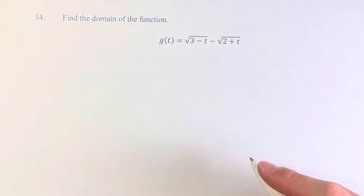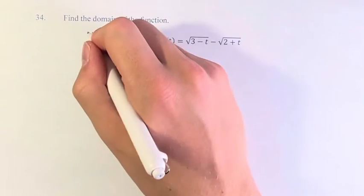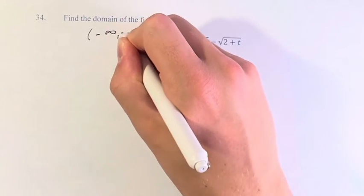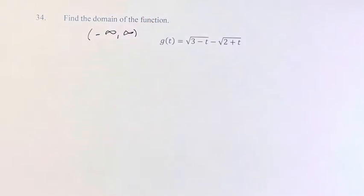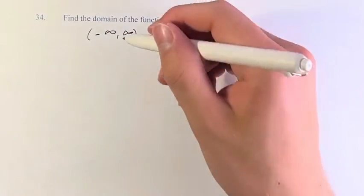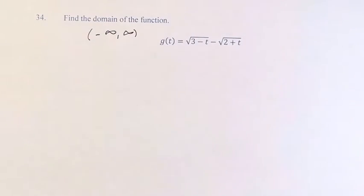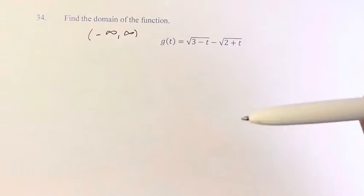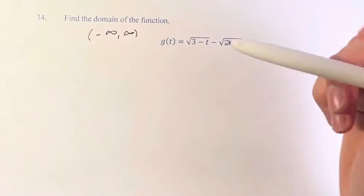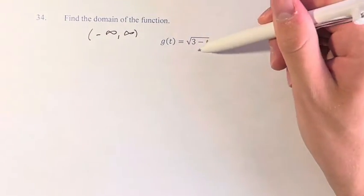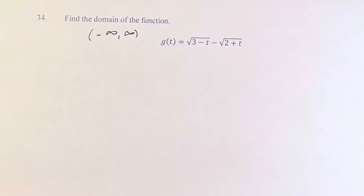So when we're looking at the domain of the function, our starting point is all real numbers, negative infinity to positive infinity. And we're going to look at our function and say which values can we restrict from this range. And here, the only way that we can have a value that's invalid is if one of these square roots is the square root of a negative number.